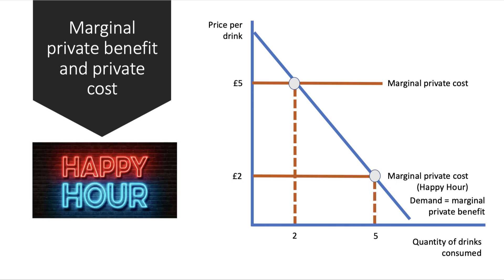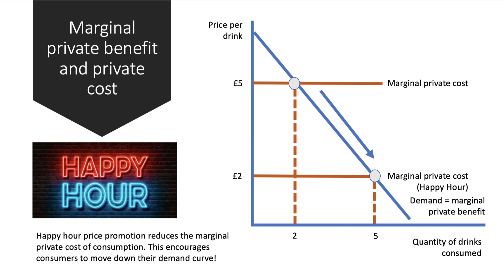A fall in price causes an expansion of demand. If a club reduces the price during happy hour — bringing the price of a drink down to two pounds — that changes the cost-benefit calculation, reduces the marginal cost of consumption, and encourages consumers to move down their demand curve.